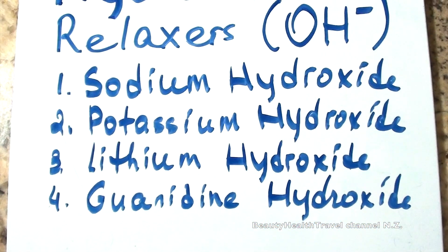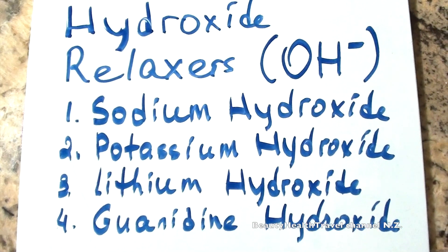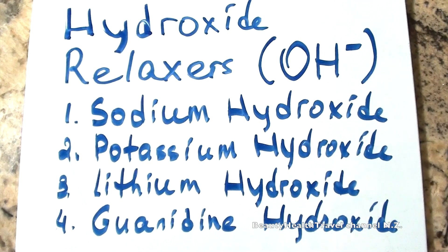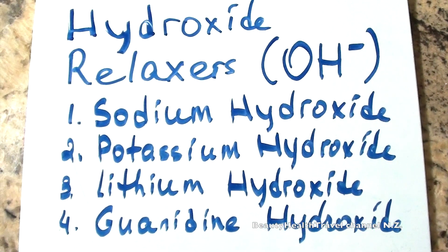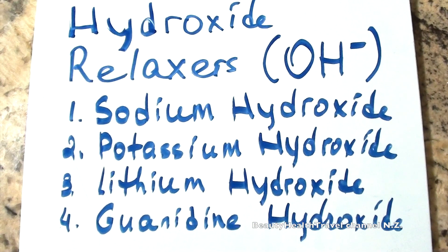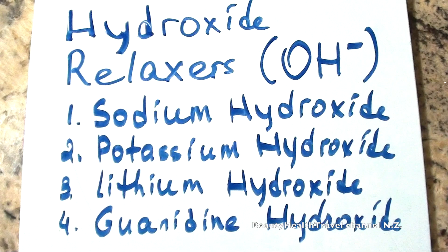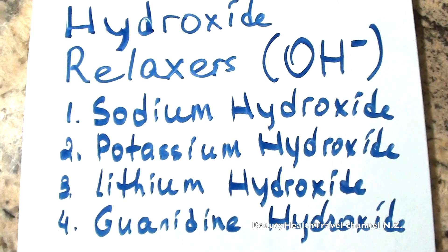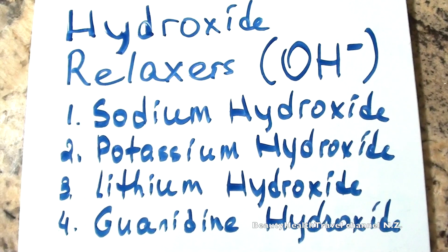The fourth one, the guanidine hydroxide relaxer, is a kind of relaxer that is more gentle to the scalp. It means it doesn't burn the scalp. But don't be fooled by that. It still has that OH- hydroxide ion. That means it is still a strong relaxer.